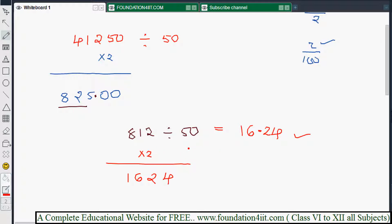Because 100 means there are two zeros. Whenever you want to divide by 100, we need to leave the two decimal places. So this is the way we can do it in a simple way. Instead of doing directly by 50, just multiply by 2 and do it this way.